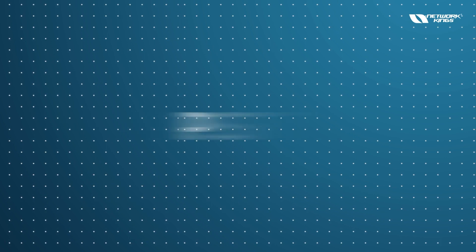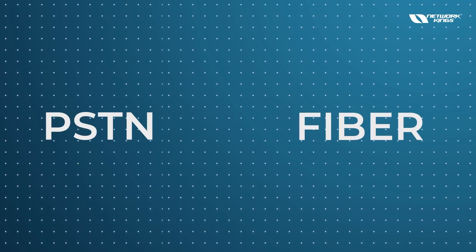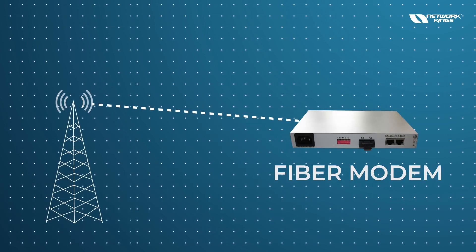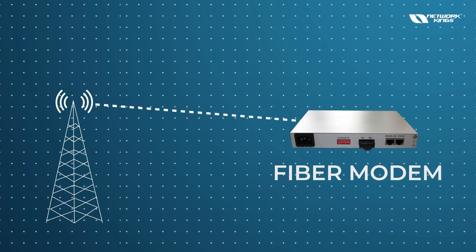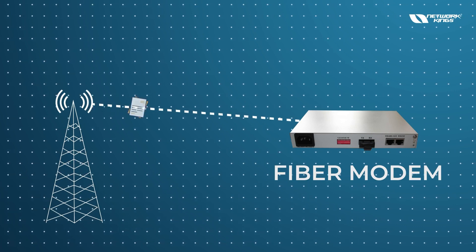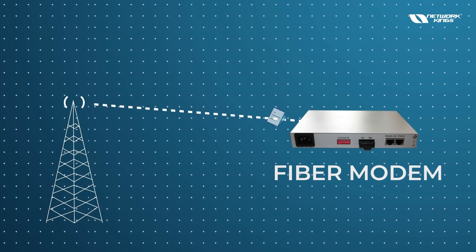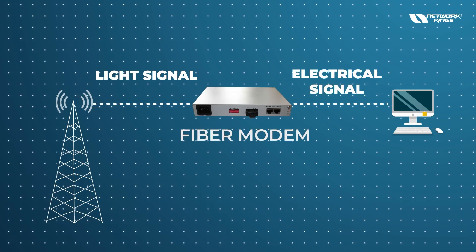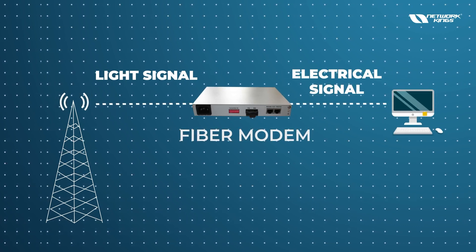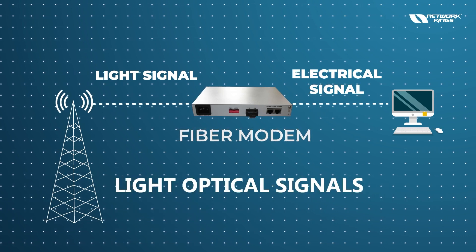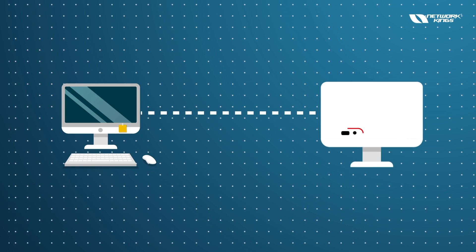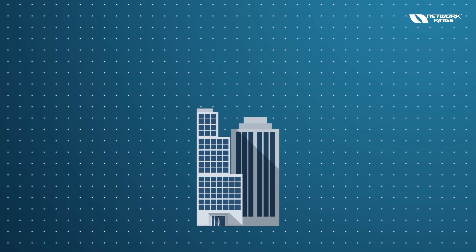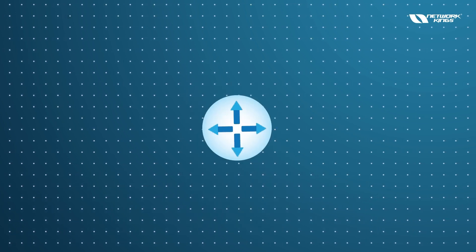PSTN is common, and fiber nowadays is also common. Fiber modems are needed because light has more speed. When data is sent in the form of light, the fiber modem converts light signals into electrical signals, because computers don't understand optical signals — they don't have chips that can process light signals.